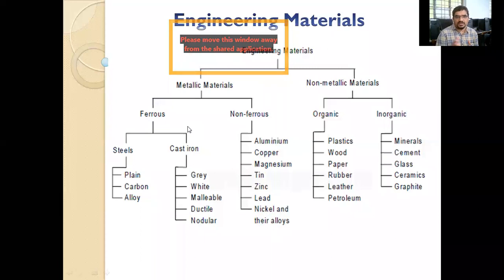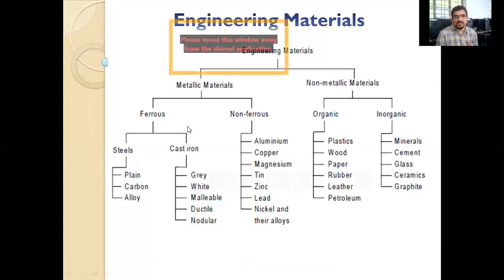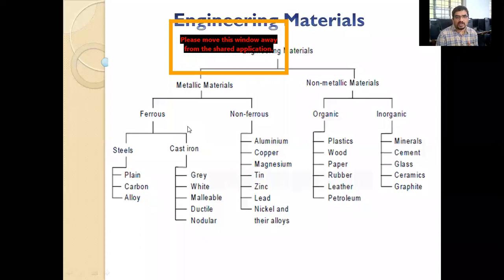In ferrous materials, the two main components are cast iron and steel. Cast iron can be gray, white, malleable, ductile, or nodular cast iron. In steel, we have carbon steel, plain steel, and alloy steel. When the carbon content is high we call it carbon steel; if it is low, it is plain steel; and if we mix alloys to improve properties, those are alloy steels.